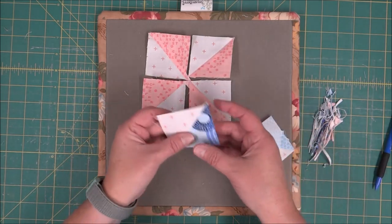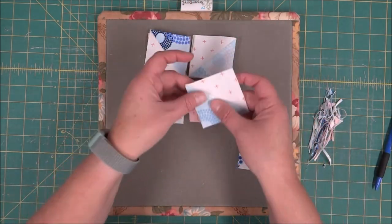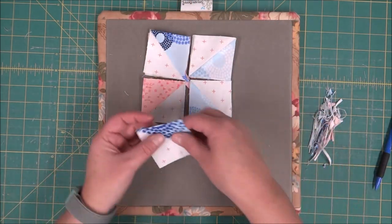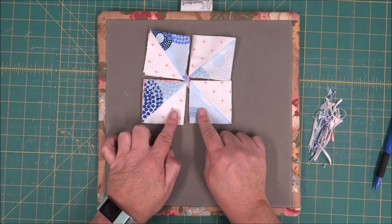Since I'm doing two blocks, I can go ahead and lay one right on top of each other. Sometimes this helps when you're sewing them together to keep things straight. I'm going to sew these two together and these two together.